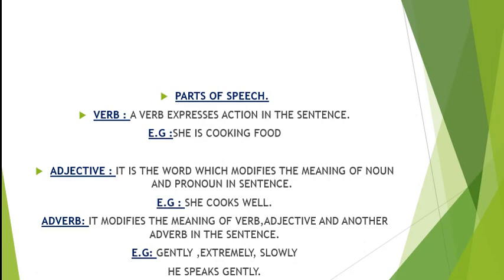A verb expresses action in the sentence. For example, 'She is cooking food.' She is doing what? Cooking. Cooking is the first form of the word plus -ing, which is the requirement of the tense, so cooking is the action in the sentence. Any word which shows action is called a verb. For example, 'She plays football' — play is a verb.